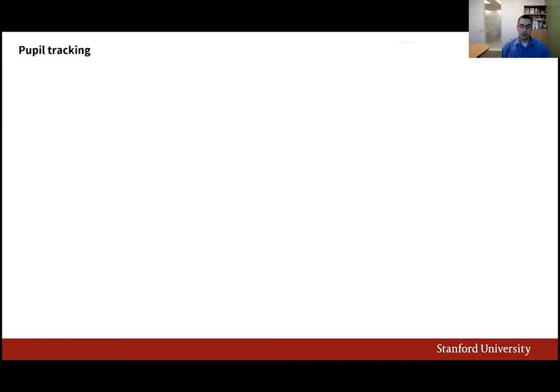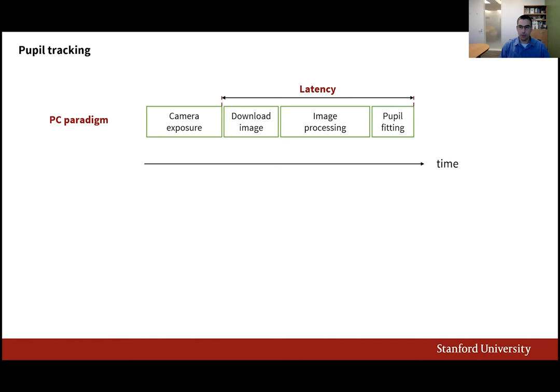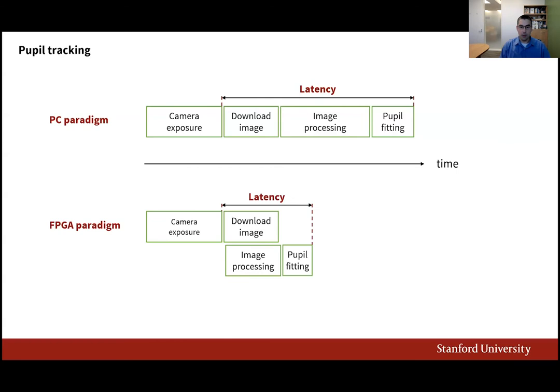The first step towards effective correction of involuntary eye motion is the precise measurement of eye movement with minimal latency. In the current pupil tracking paradigm, the capture of pupil images, the transfer to a computer, and the processing to find the pupil location are all performed in sequence. In our paradigm, a specialized computing technology called Field Programmable Gate Array, or FPGA, processes the pupil images as they're being downloaded from the camera, resulting in lower latency.